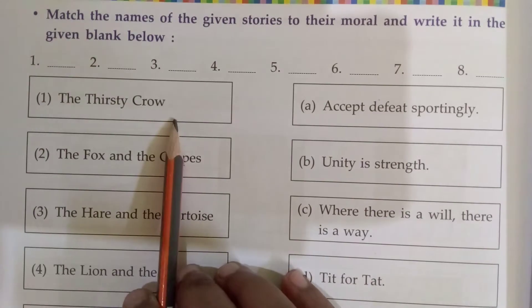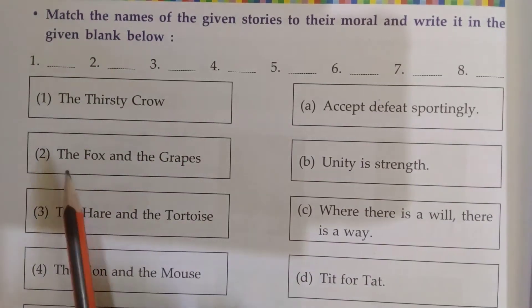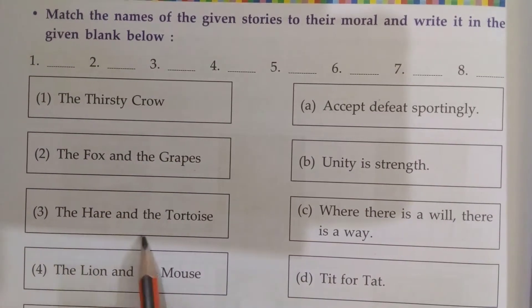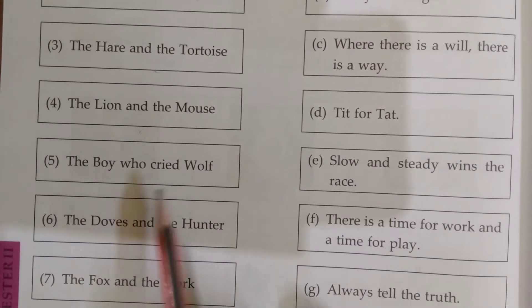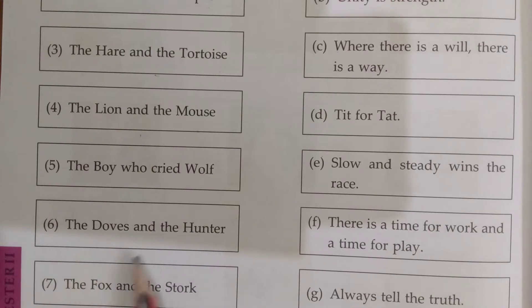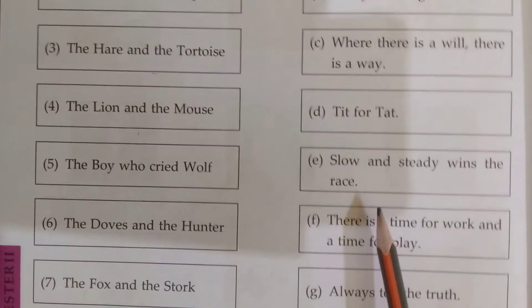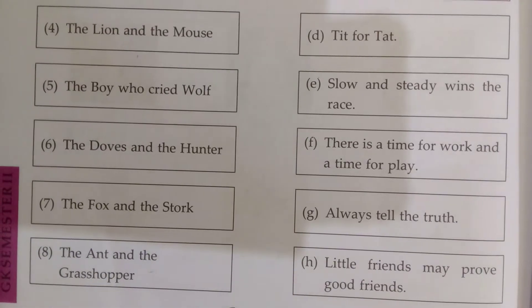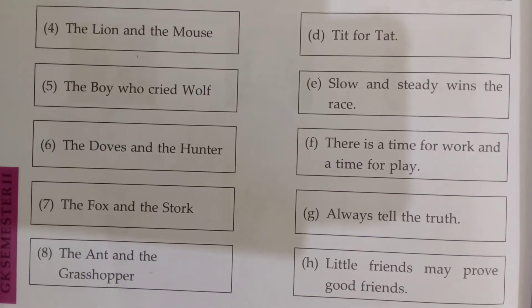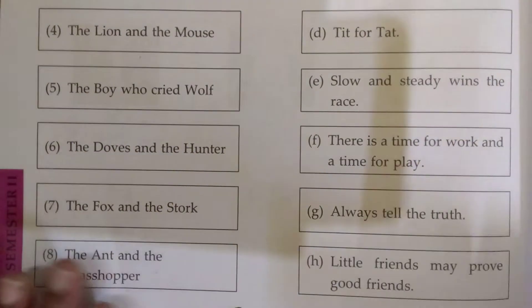The story names given are: The Thirsty Crow, The Fox and the Grapes, The Hare and the Tortoise, The Lion and the Mouse, The Boy Who Cried Wolf, The Dove and the Ant, The Fox and the Stork, and The Ant and the Grasshopper. Now on this side we will see the morals.